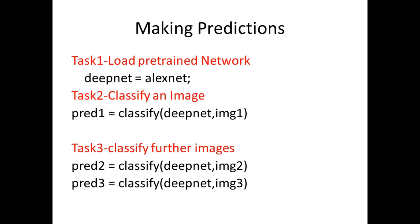We then proceed with making predictions. For making predictions, we use AlexNet, which is a CNN architecture, and we load that to deep_net. We perform classification using the deep_net architecture for img1 and make the prediction. Task 3 would be classifying further images.